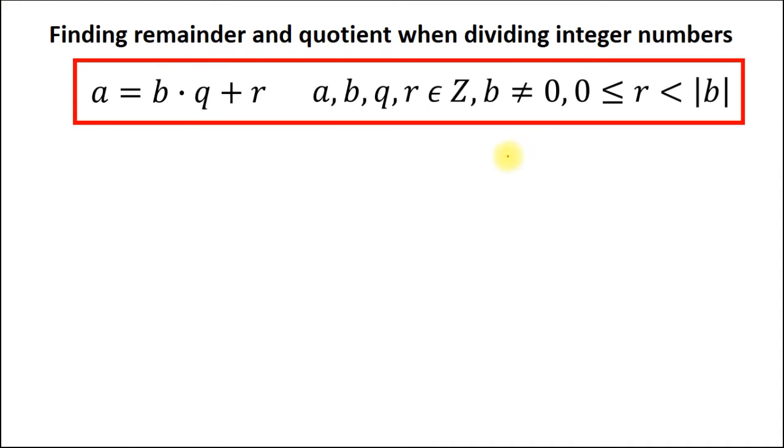For better understanding let's consider the examples. I put all the important information on the top of the slide. First of all let's find the quotient and the remainder when dividing 27 by 4. The question is how many times does 4 go into 27?